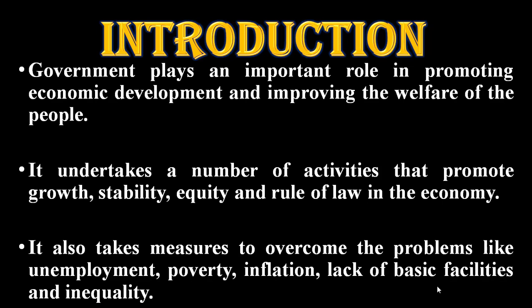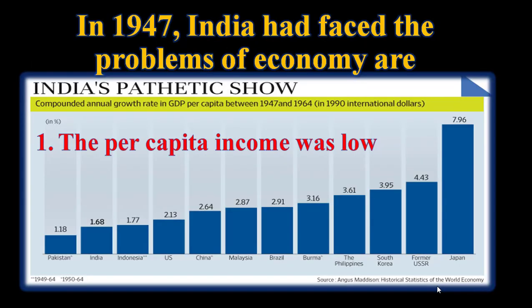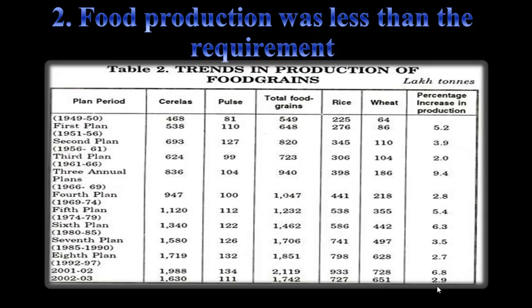When we got independence in 1947, India faced a lot of problems. First, the per capita income was very low compared to other countries. A bar graph shows the GDP and per capita income in dollar terms, and it was very low compared to other countries. Second, food production was less than the requirement.